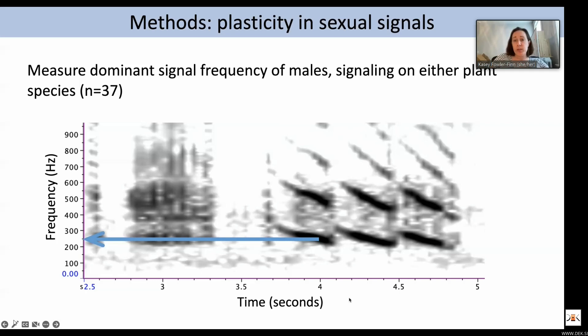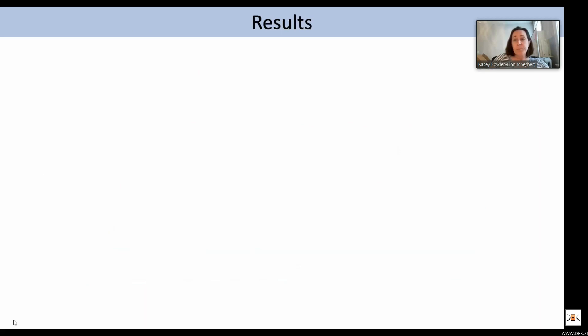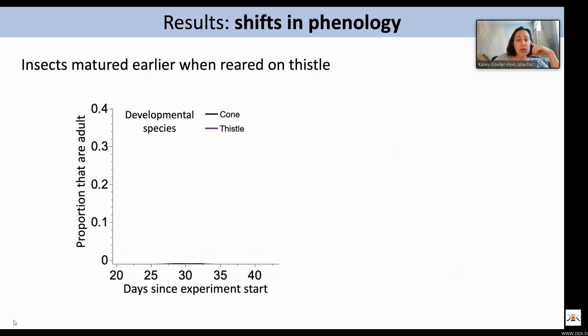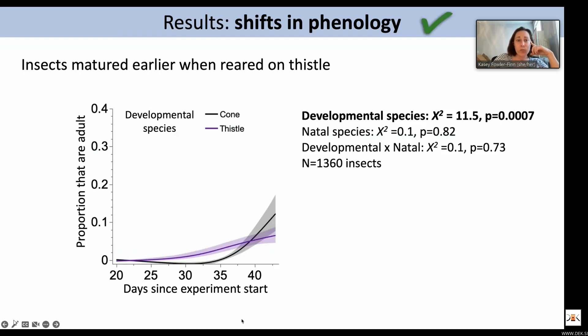It turns out that because these signals are fairly pure-toned, they are relatively unaffected by transmission through the plant. For our results on shifts in phenology, we found that insects matured earlier when reared on thistle. Individuals reared on thistle, shown in purple, started maturing earlier compared to those reared on coneflower in gray. There was a large effect of developmental plant species, and natal plant species had no effect on adult maturation.